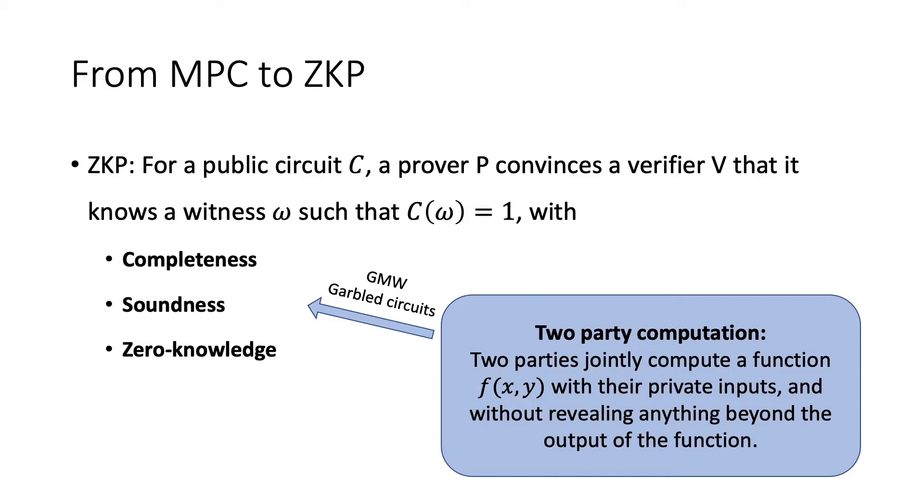In the two-PC settings, there are two protocols, the GMW and the garbled circuit. I've already mentioned the zero-knowledge proof based on garbled circuit in previous slides. And for our protocol, we use the GMW protocol to build a zero-knowledge proof protocol with less communication and cheaper computation.